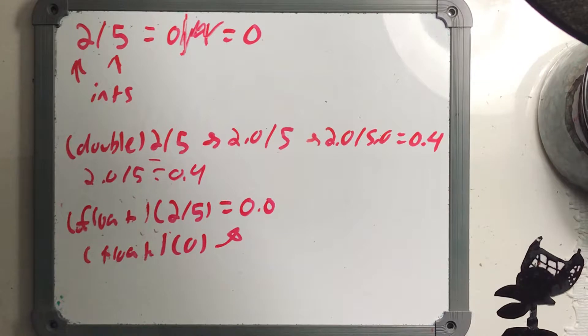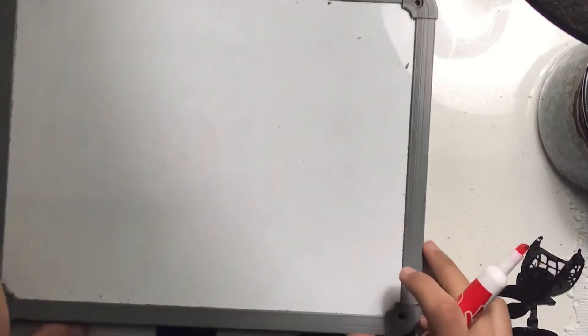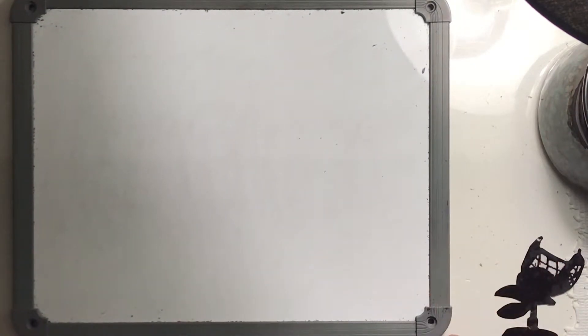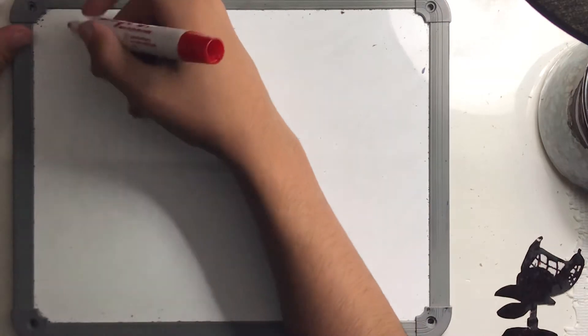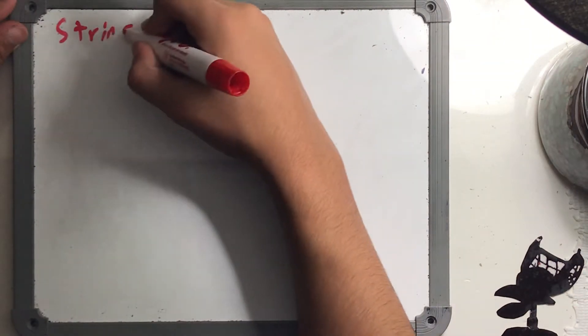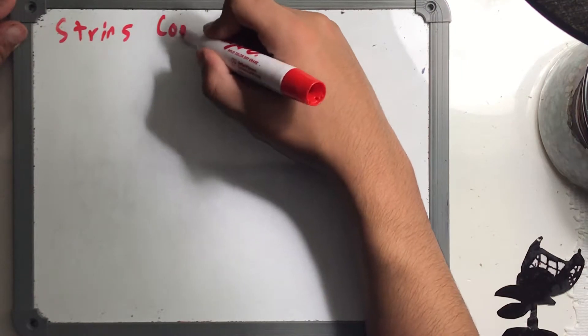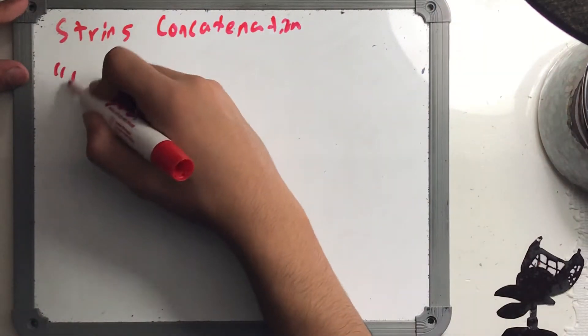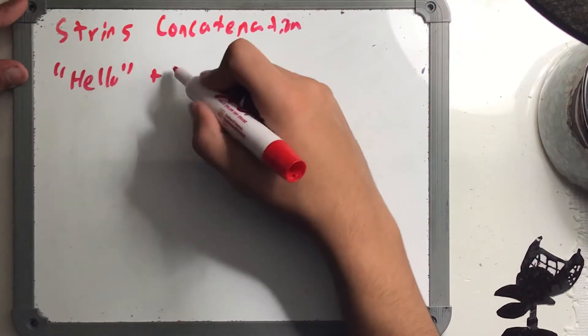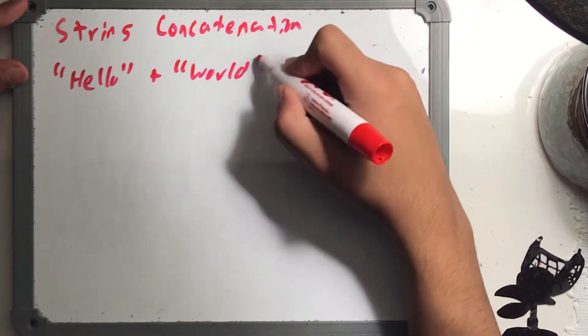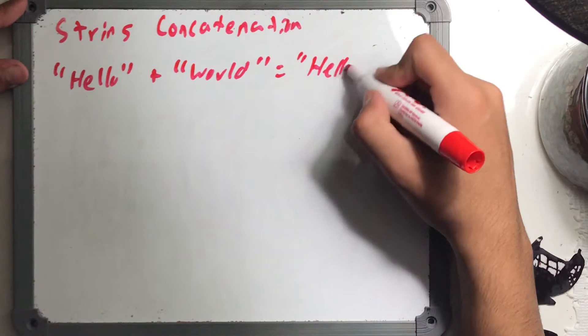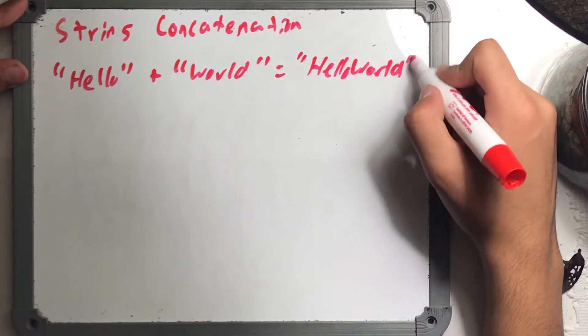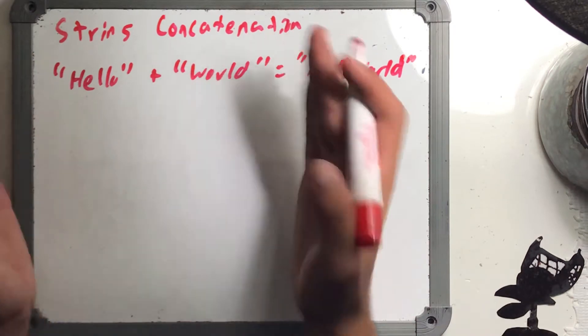The next concept is string concatenation. Think of it like a magnet. If you have the string "hello" and add it to "world", the answer is "helloworld" — the two strings get stuck together.